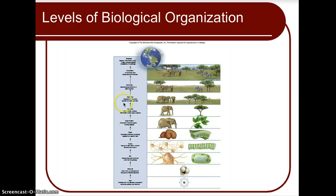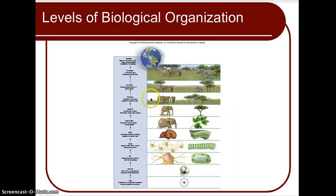When you have the same organism living in a general area, that is a population — for example, a population of African elephants, baobab trees, zebras, lions, or a certain type of grass. When you take all those populations together, you have a community, where those populations start to interact with one another. All those communities make up the ecosystem, where the living world begins to interact with the non-living world.